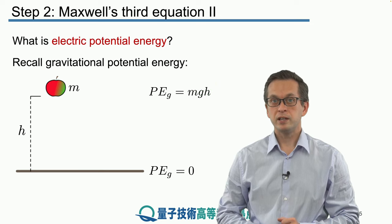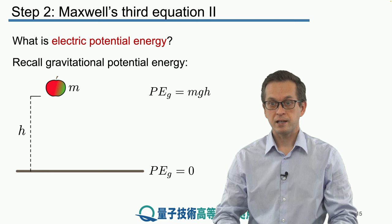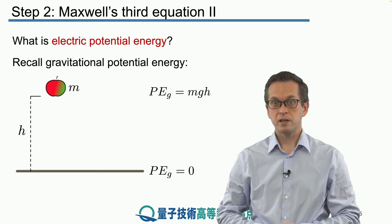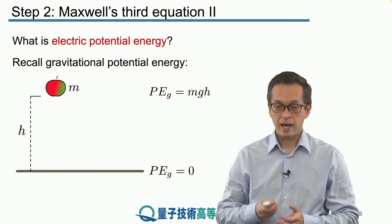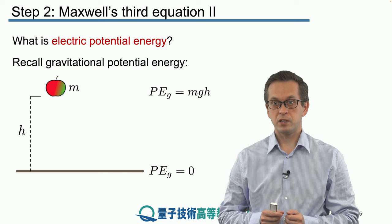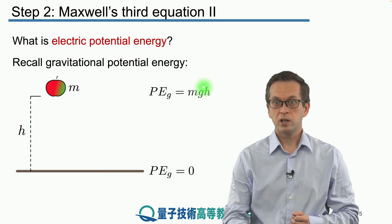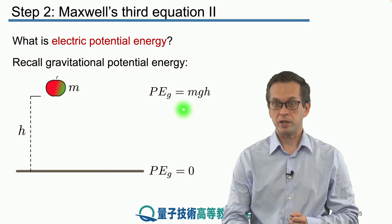What it means really is that if you let go of the object, it will accelerate towards the surface of the Earth, gaining kinetic energy. And just as it hits the surface of the Earth, it will have kinetic energy that will be equal to its potential energy given by this expression.